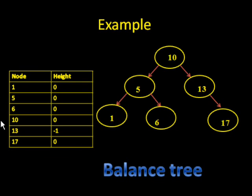Notice that the height of each node is 0, except for 13, which is -1, because it took the height of the left tree, which is 0, and the height of the right tree, which is 1. So it says 0 minus 1, which is -1.